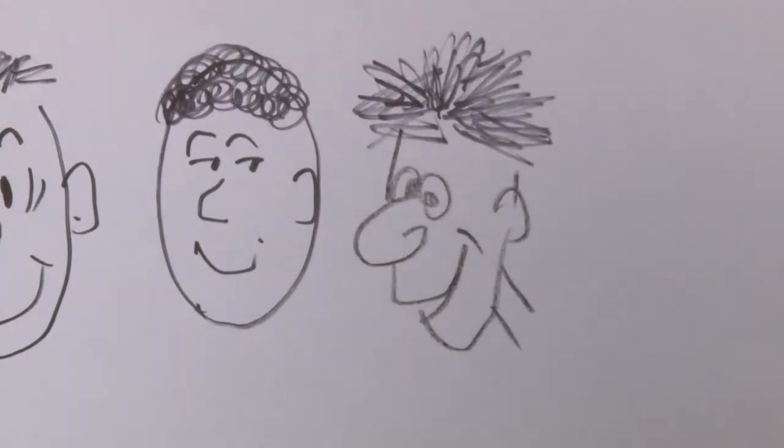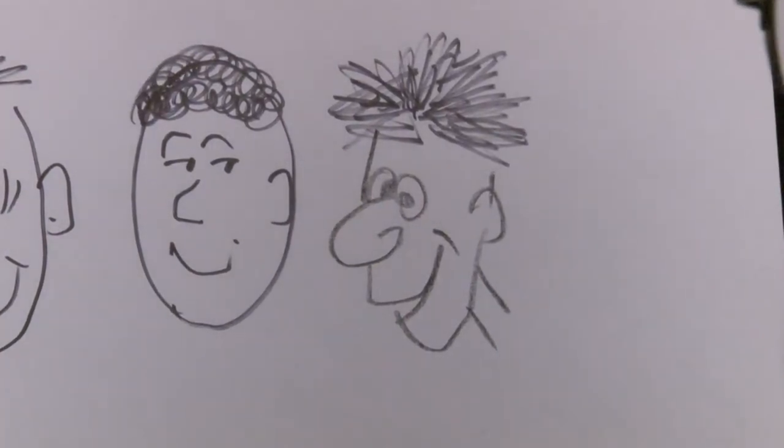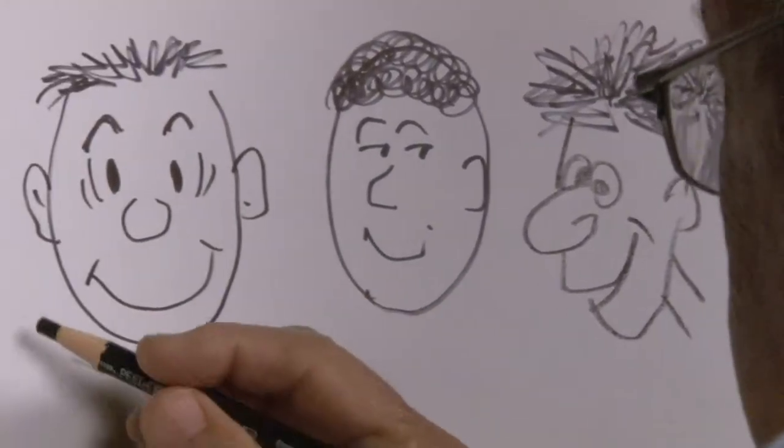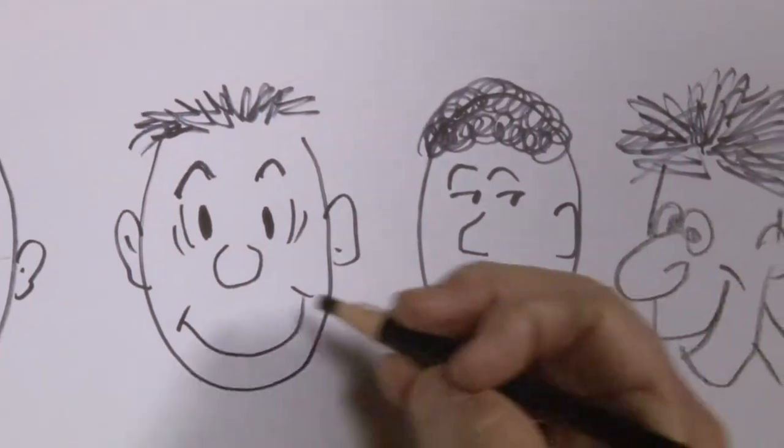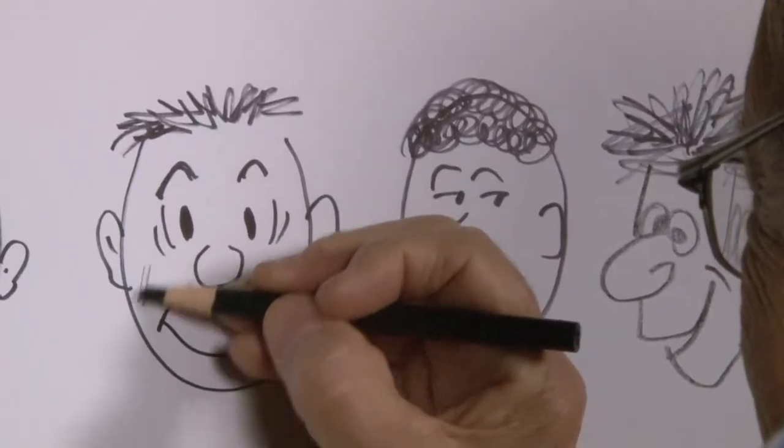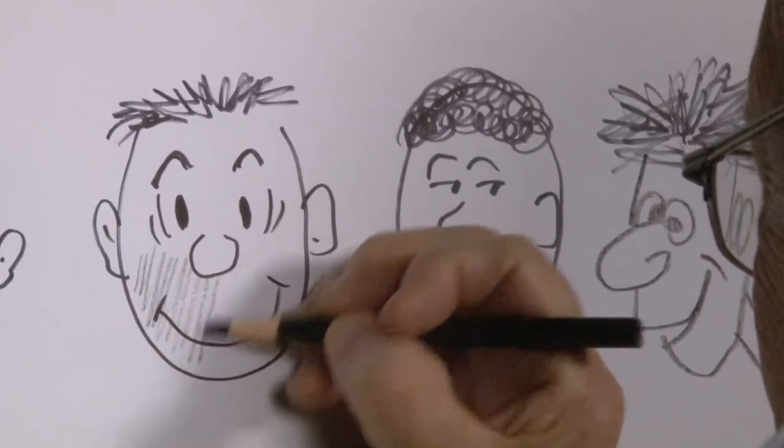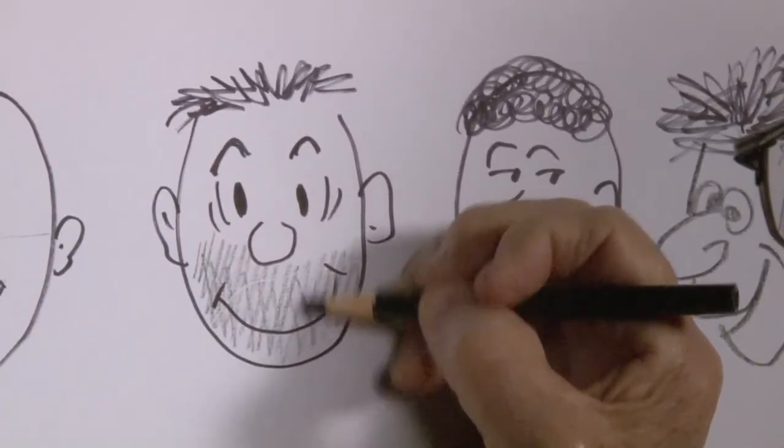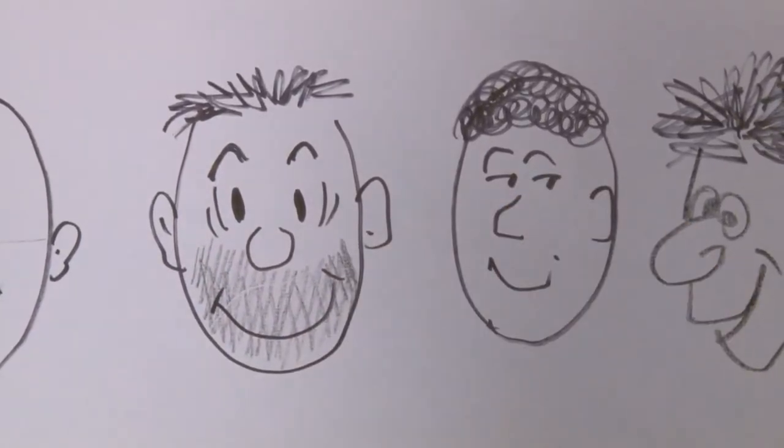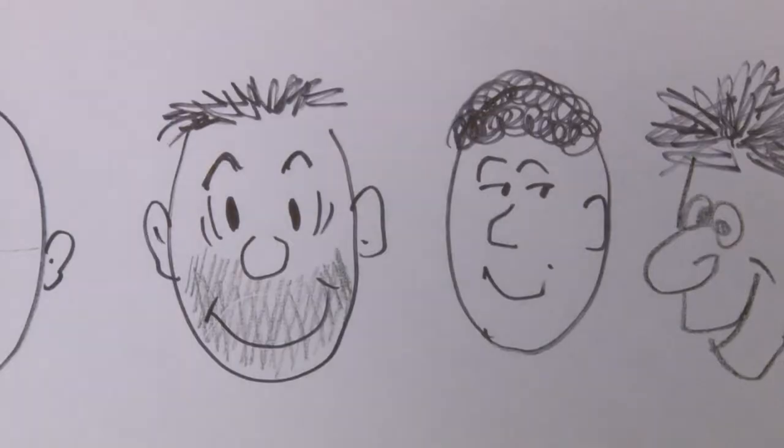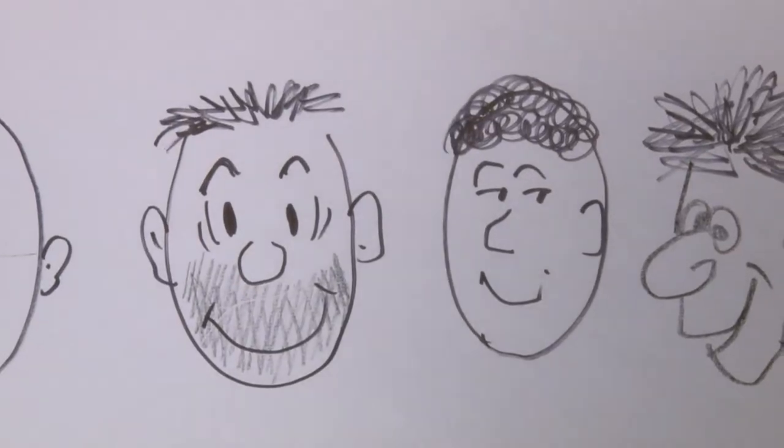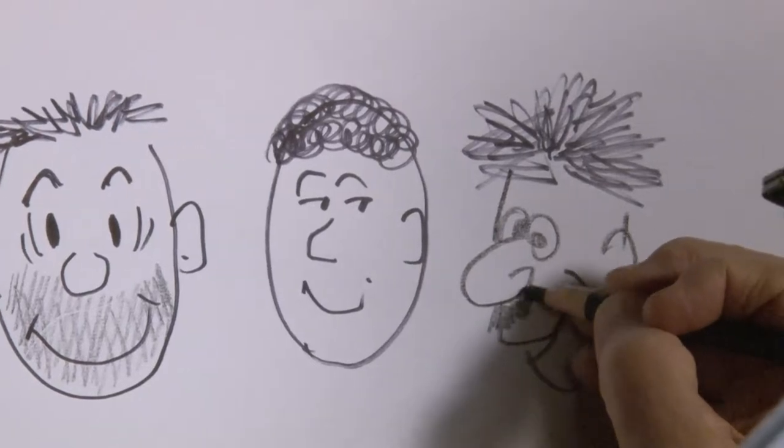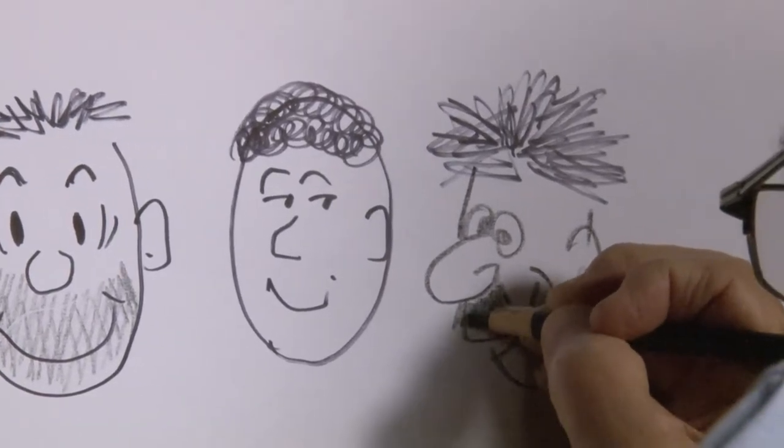Other things you can do to present various aspects of your cartoon character. You can put lines like these, which indicate this guy has got a lot of whiskers on his face. Or you can put little lines like this to provide a mustache.